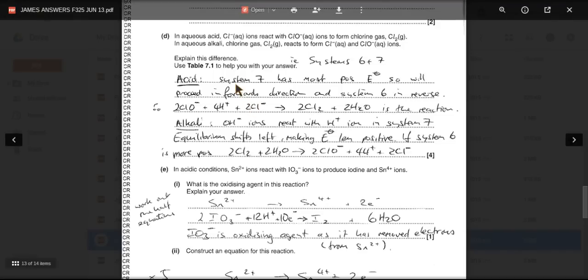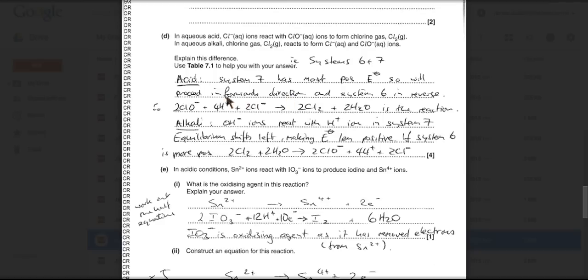So I'll just go through my answer. In acid conditions, system 7 has the more positive standard electrode potential. So we'll proceed in the forwards direction and system 6 in reverse. And I've written the overall equation. In alkaline conditions, the hydroxide ions react with the H plus ions in system 7. This shifts equilibrium to the left. That makes its electrode potential less positive. And then when system 6 becomes more positive, you get this reaction here, which is the one I've just read out. And chlorine produces chlorate and chloride.